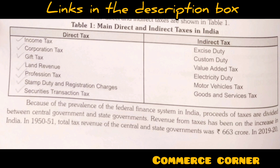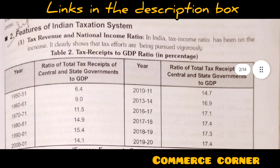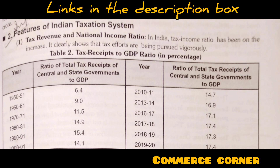Now we have an introduction to tax — direct tax and indirect tax with examples. This will show how a long question is structured. The first point is the tax revenue and national income ratio. A table is shown here: in 1950-51 the tax ratio was 6.4%, in 1960-61 it was 9%, and in 1971 it was 11.50%. In 2020 it is also around 11.50%.